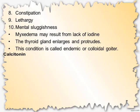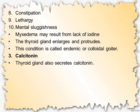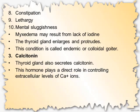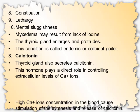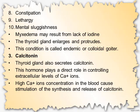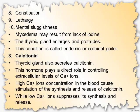The third hormone is calcitonin. The thyroid gland also secretes calcitonin. This hormone plays a direct role in controlling extracellular levels of calcium ions. High calcium ion concentration in the blood causes stimulation of the synthesis and release of calcitonin, while low calcium ion concentration suppresses its synthesis and release.